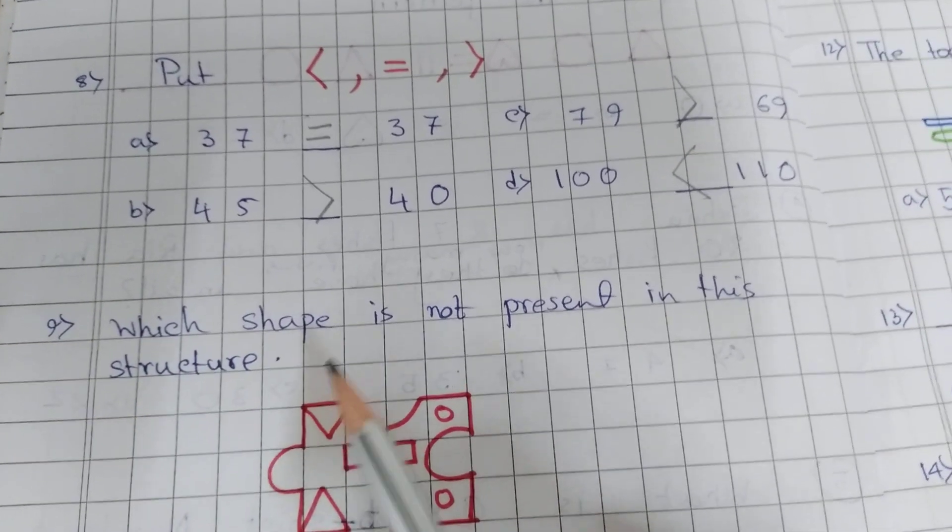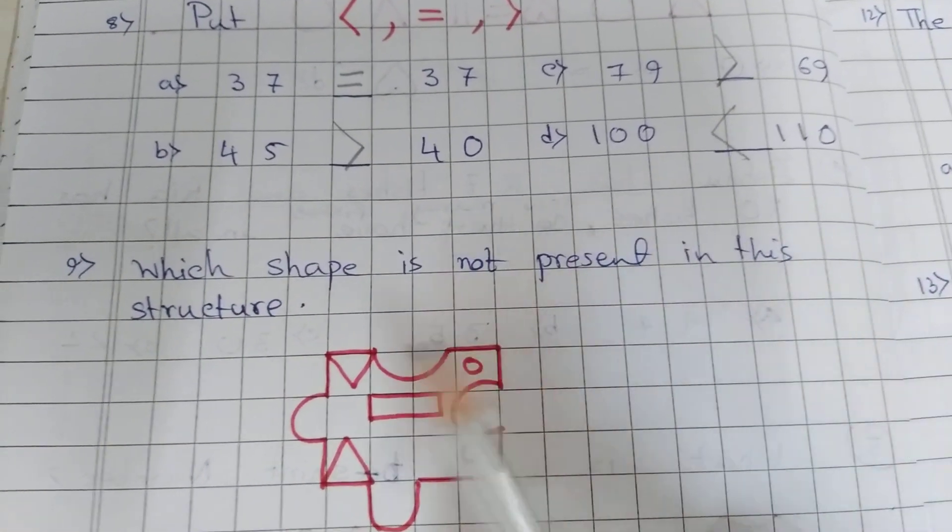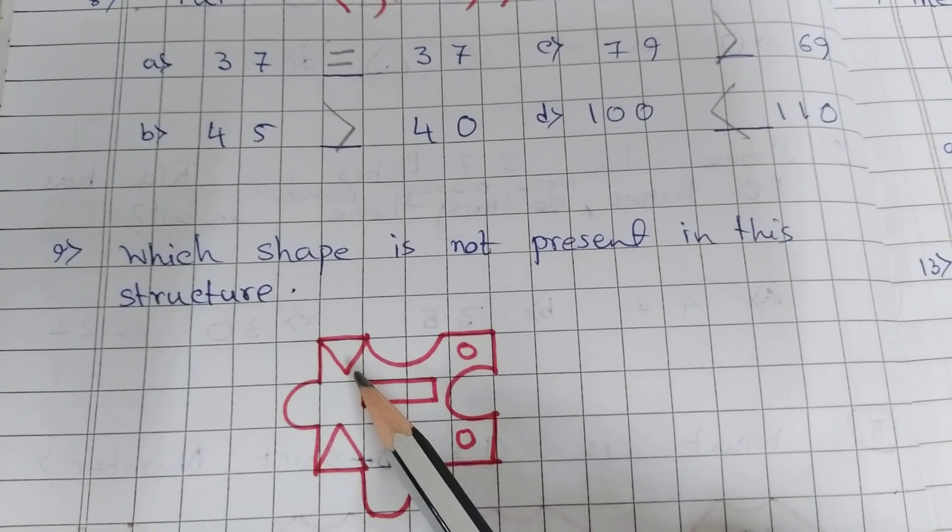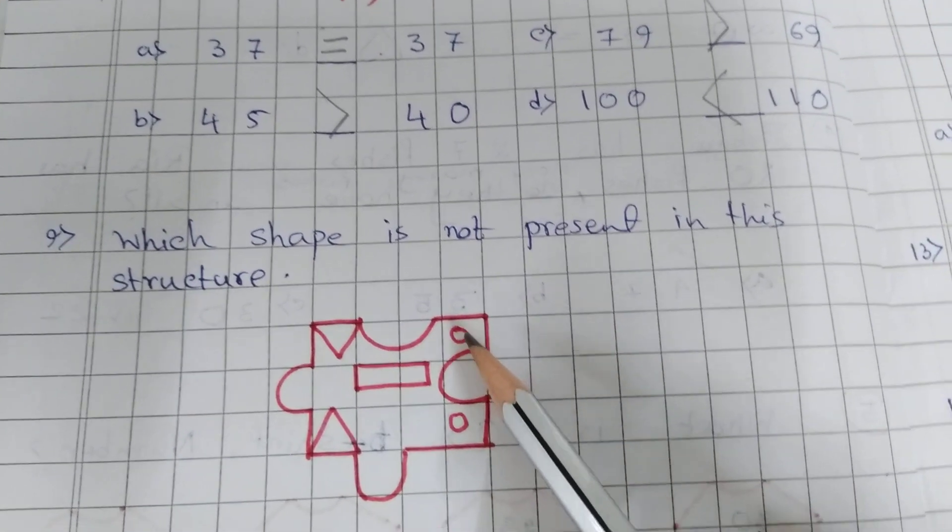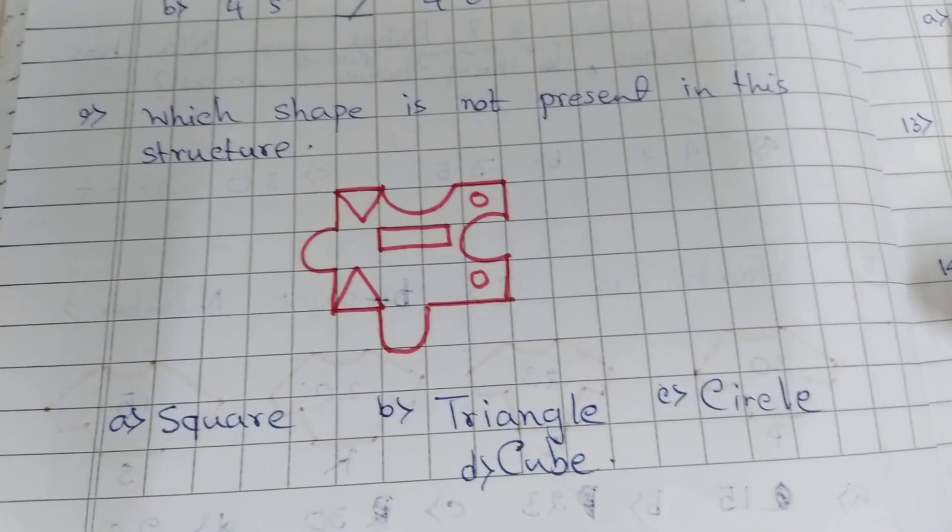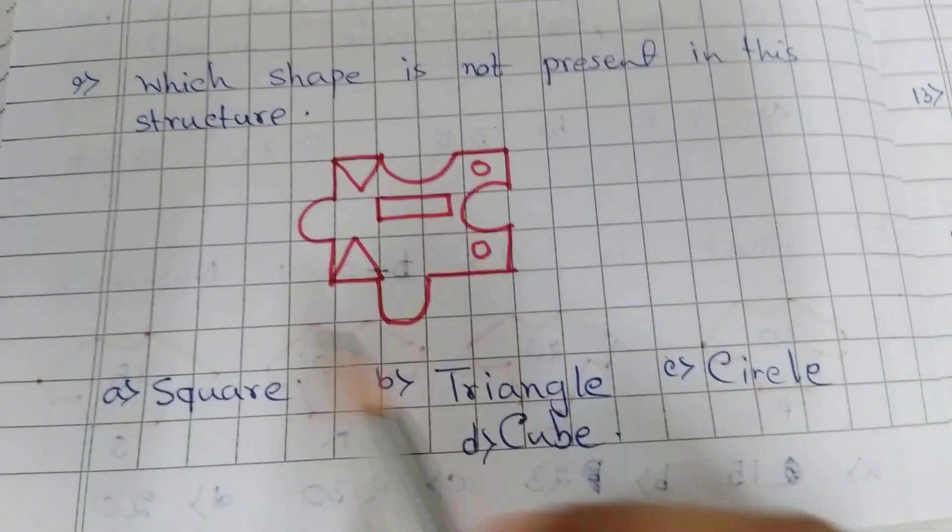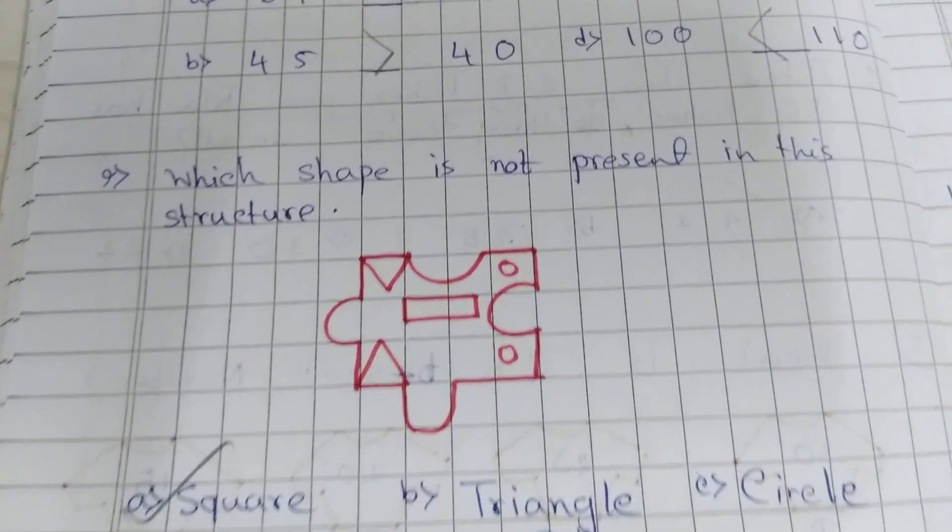Question number 9. Which shape is not present in this structure? Triangles, rectangle, circles are here. So square is not here.